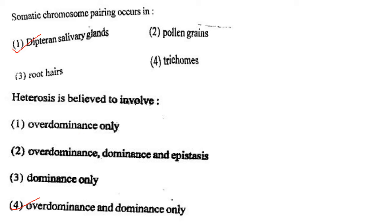Next one: Somatic chromosome pairing occurs in option 1, dipteran salivary glands; option 2, pollen grains; option 3, root hairs; option 4, trichomes. Answer is option 1: dipteran salivary glands.